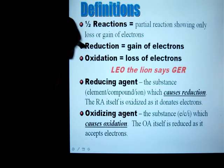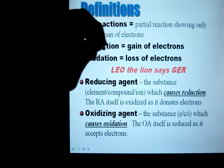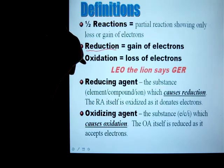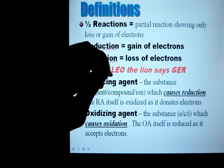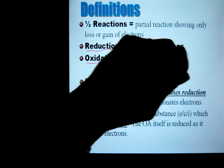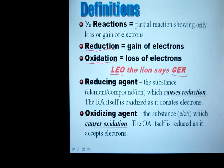Terms for those are reduction, gain of electrons, and oxidation, which is loss of electrons. An easy way of remembering that is the mnemonic device: LEO the lion says GER, with LEO meaning loss of electrons as oxidation, and GER meaning gain of electrons, which is reduction.